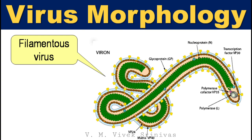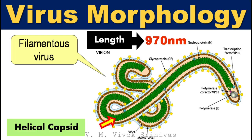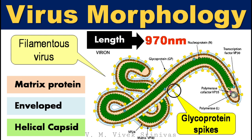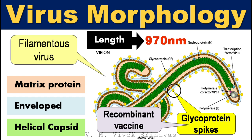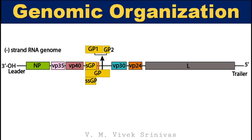Virus morphology: the filovirus is extended and filamentous, with a 970 nanometer length. This virus possesses a helical capsid, is covered with a lipid envelope all around, and has a matrix protein below. This lipid envelope is studded with an important protein named glycoprotein, which is the immunodominant protein playing a major role in antigenicity — that is, it acts as the virus-neutralizing antigen. For Ebola virus prevention, a recombinant vaccine with this glycoprotein has been engineered and launched recently for use in African countries. The picture shown here is an electron microscope image of a filovirus showing its extended, filamentous virus morphology.